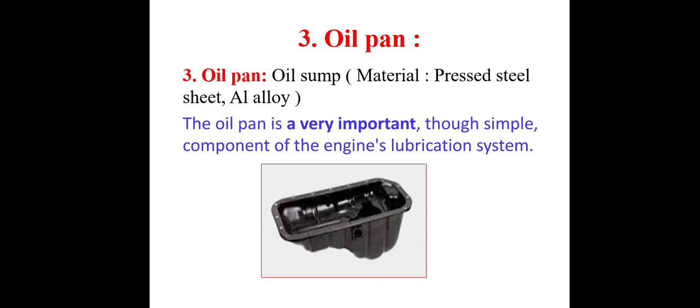The third component is the oil pan, also called the oil sump. The oil pan is a very important component of the lubrication system. The oil which is supplied for lubricating the aluminum components of the engine is collected in the oil pan. It is made by pressed steel or aluminum alloy.